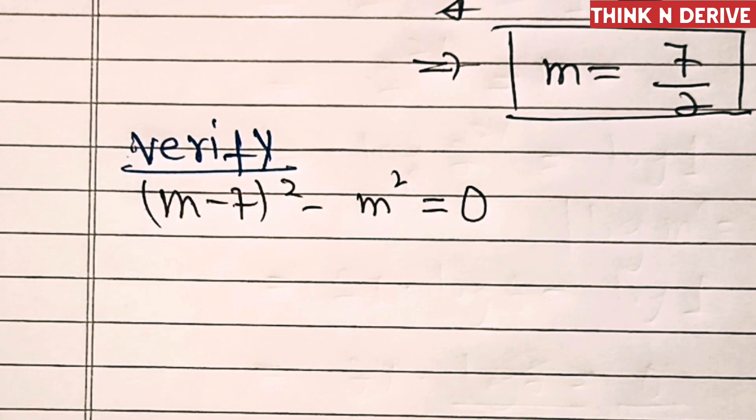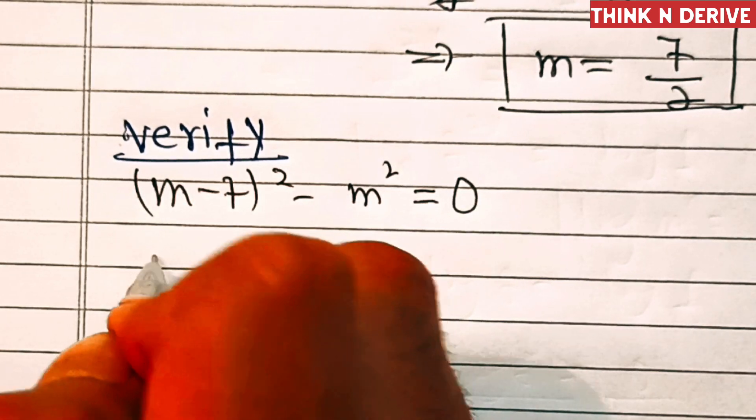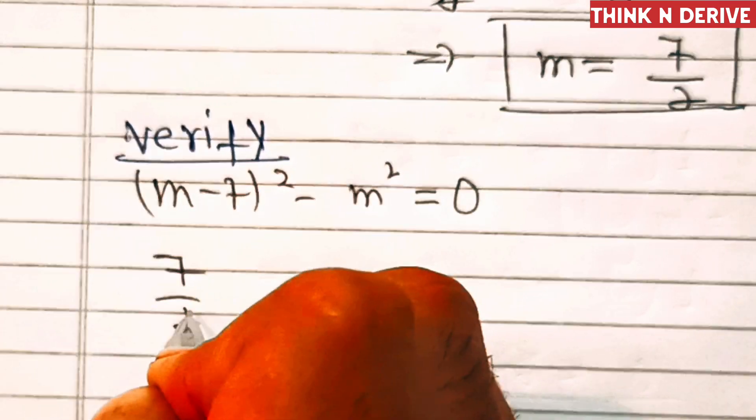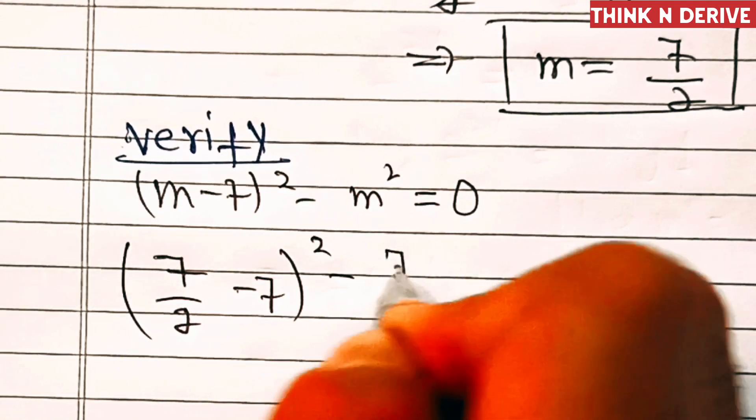Now let's verify this. We'll put 7 by 2 in our question. So this will become 7 by 2 minus 7 whole square equals 7 by 2 whole square.